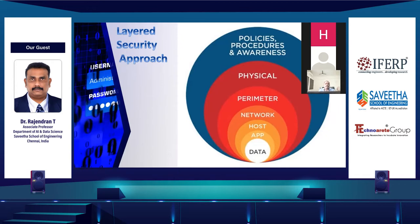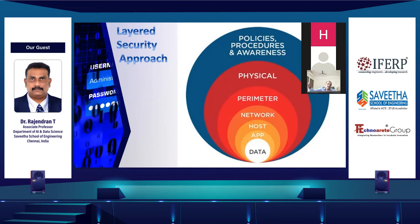The next layer is physical. It is all about physical protection — keeping security guards, gates, cameras, and protecting unauthorized physical access. No one should enter restricted resources without permission. After that is the perimeter layer — protecting computing resources like server rooms and network resources. Edge devices such as routers at the entry level need to be protected through the perimeter approach.